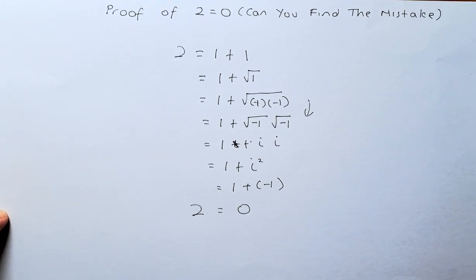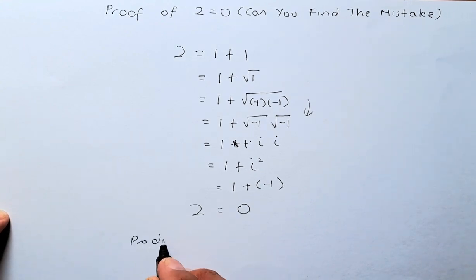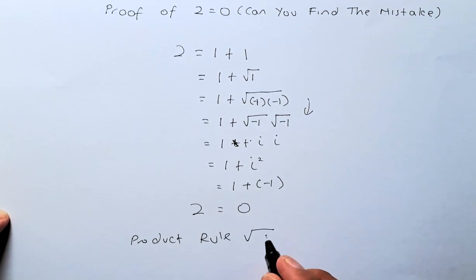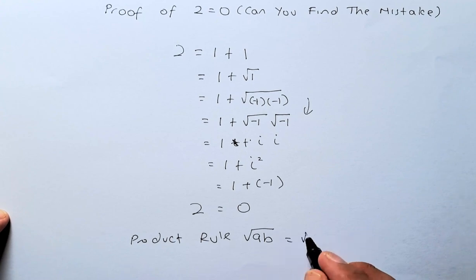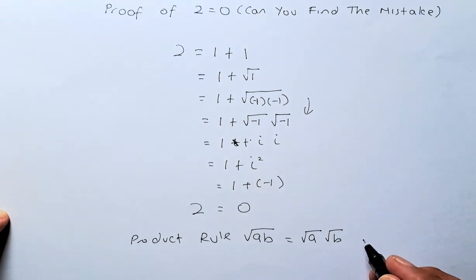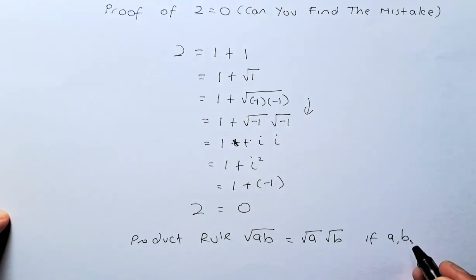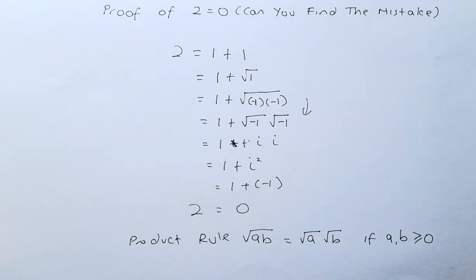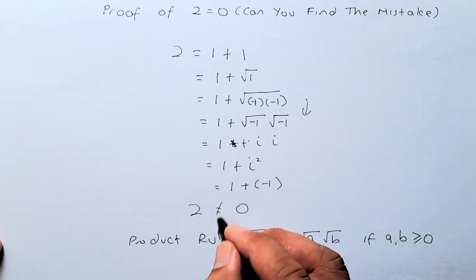There is a thing called the product rule of square roots. It states that the square root of a times b is equal to the square root of a multiplied by the square root of b. This is what they used — but this rule is only applicable if a and b are both greater than or equal to 0. In our case, both a and b are negative, so the rule does not apply. This is where the mistake comes from, and that is why 2 is not equal to 0.